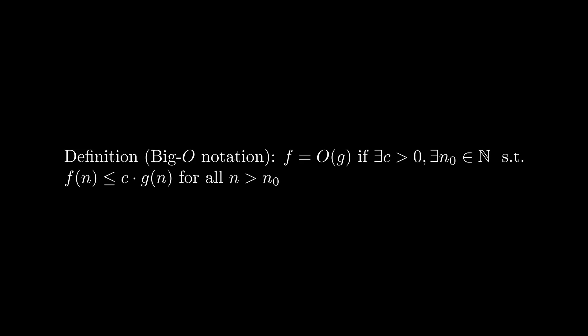Specifically, for some functions f mapping from the natural numbers to the real numbers, if f equals O(g), then there exists some c greater than 0, such that f(n) is less than or equal to c times g(n), for all n greater than n-naught, for some n-naught in N.